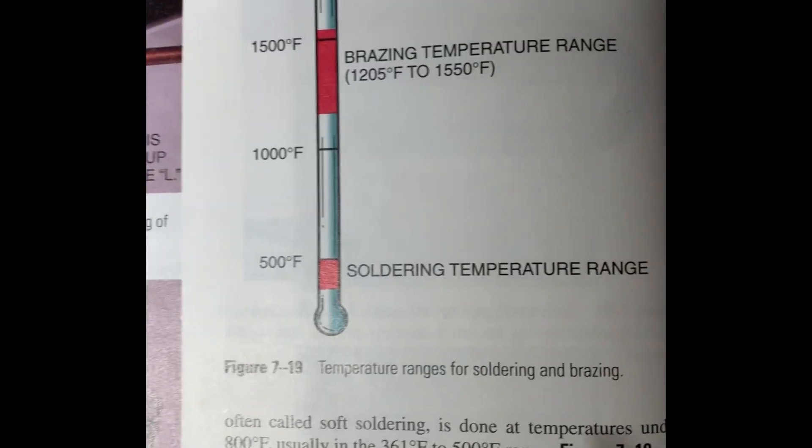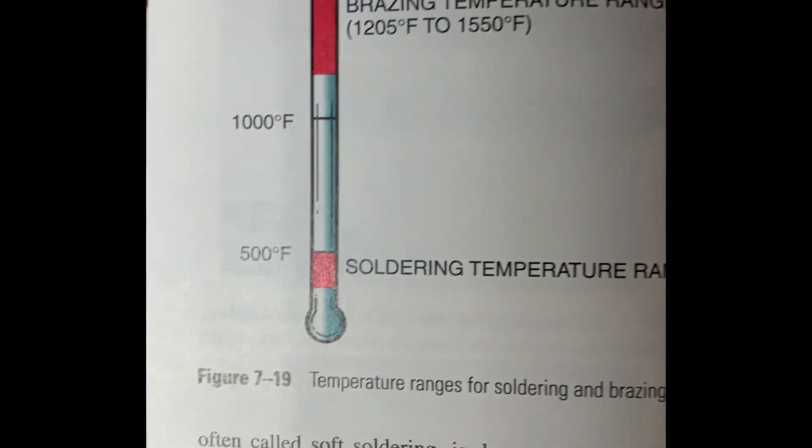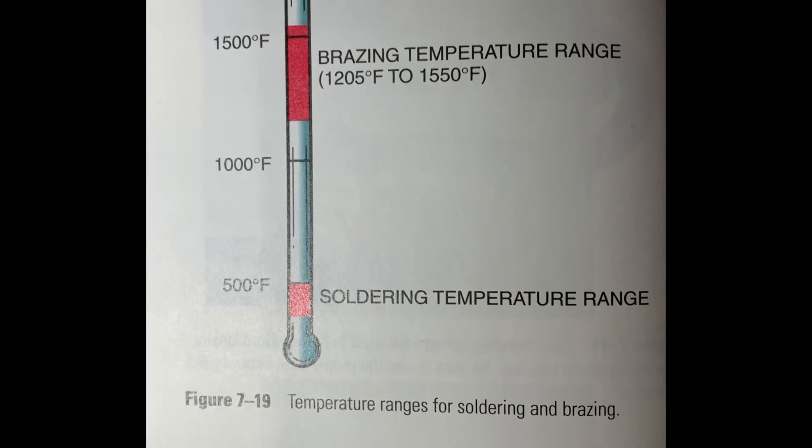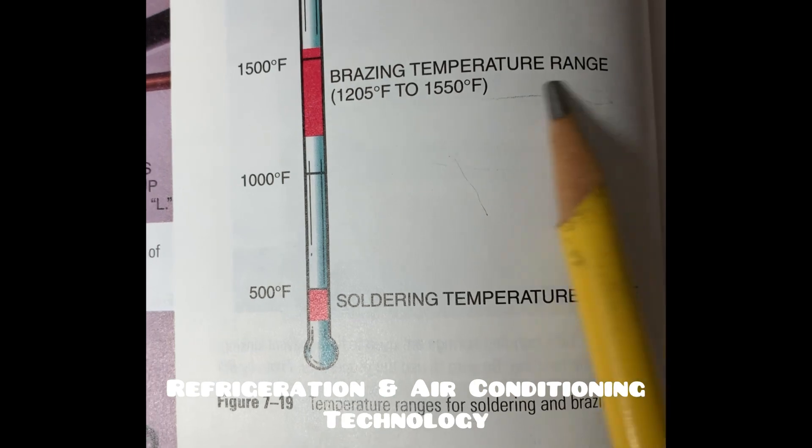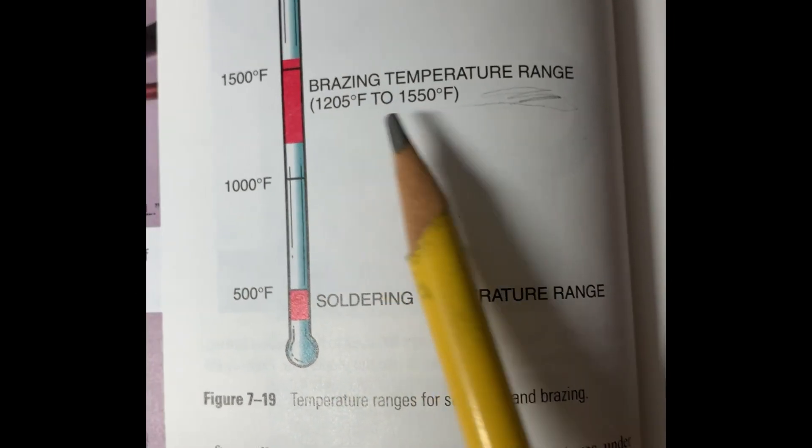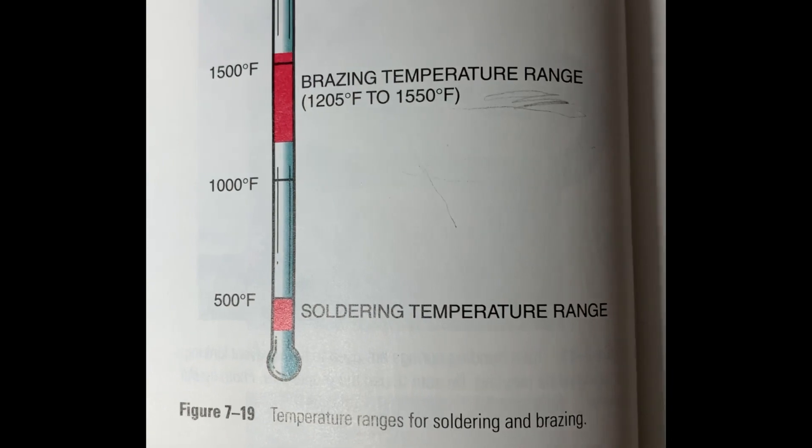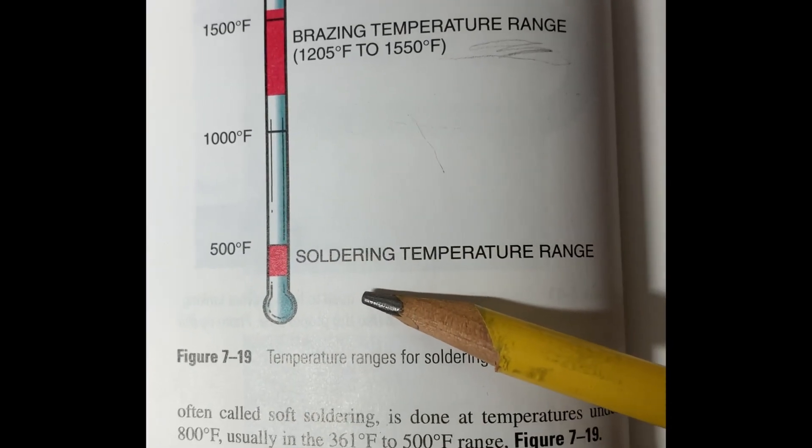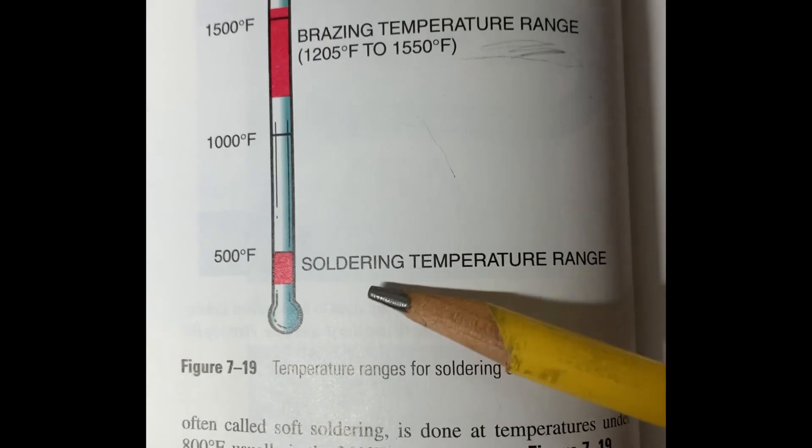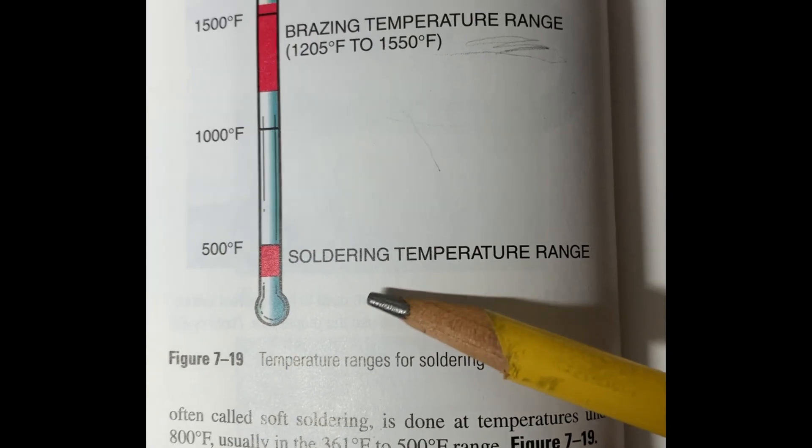And if you look on this side, it's figure 7-19 if you have this particular book, but it tells you where brazing temperatures occur. It's 1200 to 1500 degrees, basically. Soldering is done at a much lower temperature. While it is the same technique, it's a much lower temperature and a different filler material.